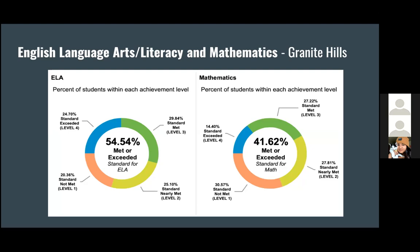Looking at these graphs for English Language Arts literacy and mathematics for Granite Hills, the percentage of students meeting standard is 55.55% for ELA and 41.62% for mathematics. These are really high achievement level percentages at Granite Hill, with the majority being English speaking.